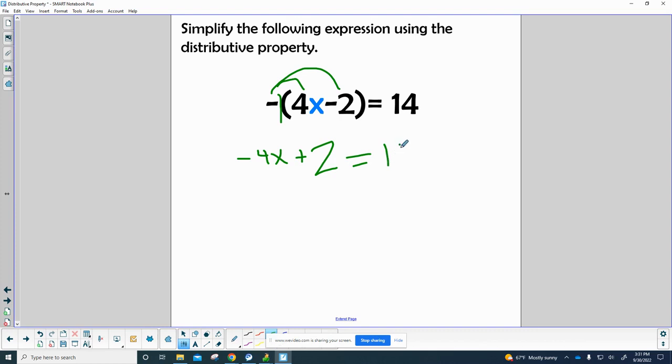That all equals 14, and now we're going to draw our wall and subtract 2. That's going to give us negative 4x equals 12. Now we've got to divide by negative 4, and when we do that, that brings us up to x equals negative 3. That's our final answer: x equals negative 3.